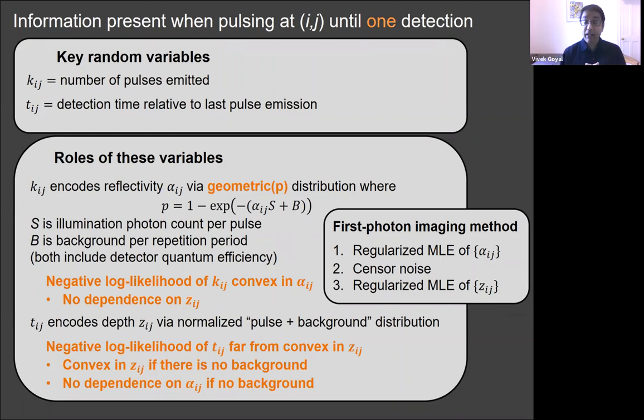So we developed an image formation method that exploits our probabilistic measurement model and makes some convenient choices to have a low complexity algorithm. We develop a three-step procedure. First, we compute a regularized maximum likelihood estimate of alpha exploiting the convexity and adding a convex regularizer. Then, because we don't want to have to deal with a non-convex problem of estimating depth directly, we want to make believe that there is no contribution from the background. To be able to make believe there's no contribution from the background, we have a step of censoring or deleting the photon detections that we believe are likely to be due to ambient light.